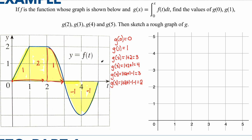We can now graph this. g of zero is zero, g of one is one, g of two is three, g of three is four, g of four is three, and g of five is two. So our graph is going to look roughly like a curve that rises to a peak at three then decreases.